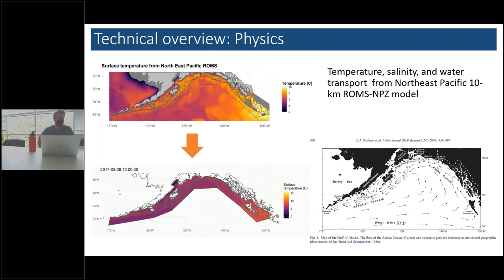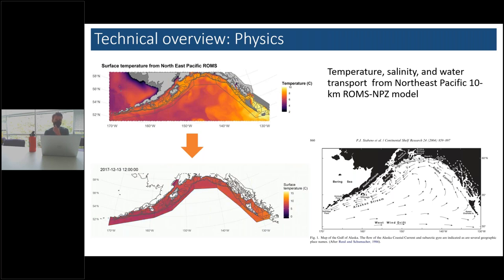Atlantis has a physical submodule. We took ROMS models — a dynamically downscaled product that takes earth system models and downscales to regional spatial scales. We took one of those for the Northeast Pacific and mapped it to the Atlantis geometry. The variables we care about are temperature, salinity, and water transport. Essentially it's an exercise in rescaling the output of ROMS to the input that Atlantis needs over time.